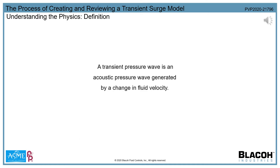Let's start with a simple definition. What is surge? A transient pressure wave, also known as surge, simply put, is an acoustic pressure wave generated by a change in fluid velocity. It can be a pressure wave that initially increases or decreases the fluid system pressure. The wave begins its travel at the location of the initial velocity change. For example, if a valve position is changed, thus changing the fluid flow, a surge wave will be induced at both the inlet and outlet of the valve.